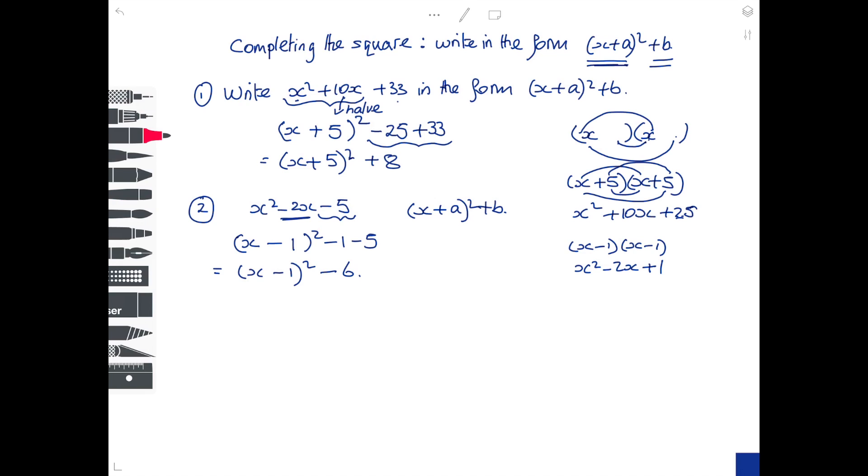A harder example is when the coefficient of x² is not 1. So something like complete the square with 4x² - 8x - 12. Notice at this time I'm not saying in the form (x+a)² + b. I can't do that now because I have a coefficient in front of the x².